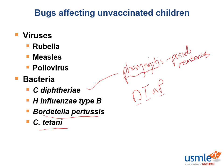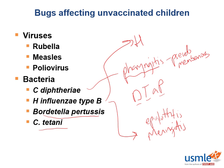What disease can Haemophilus influenzae cause in an unvaccinated patient? It can cause life-threatening epiglottitis as well as meningitis. The vaccine that covers Haemophilus influenzae is the Hib vaccine — it targets the type B Haemophilus influenzae strain.